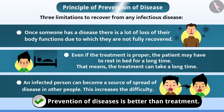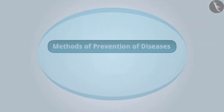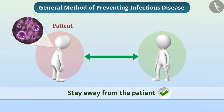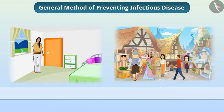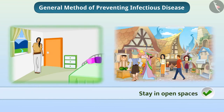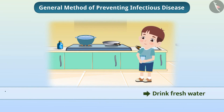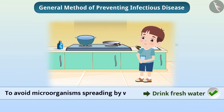What is the principle of prevention of diseases? There are two methods of prevention of diseases: general and disease specific. The common method of preventing infection is to stay away from the patient. One should stay in open spaces and away from crowded places to avoid microorganisms spread by air. Fresh water should be drunk to avoid microorganisms spreading by water.